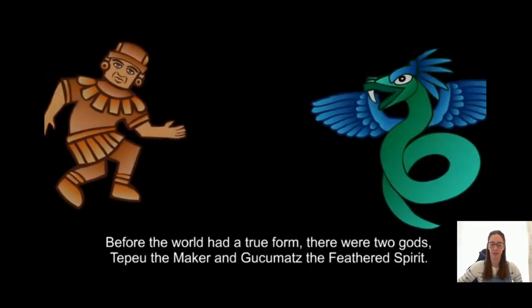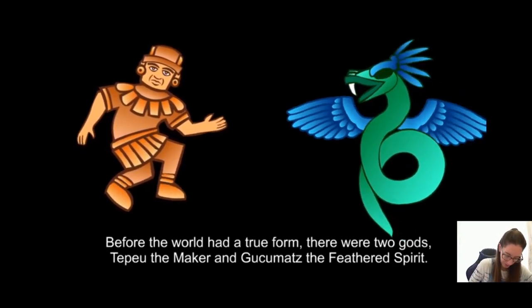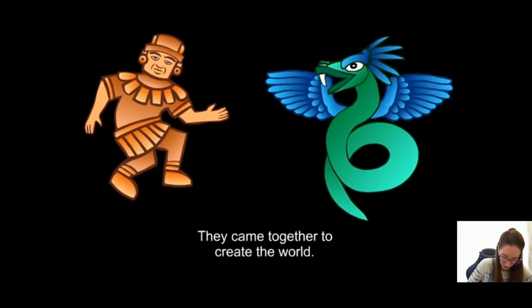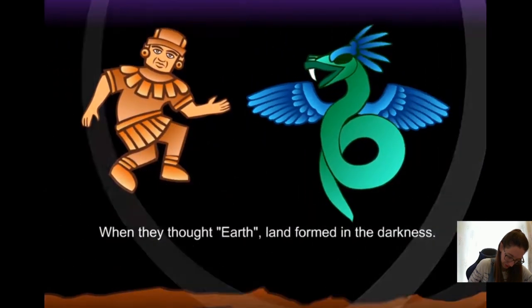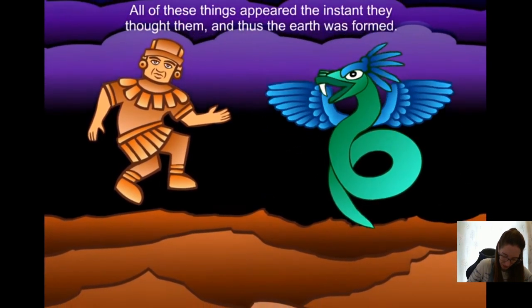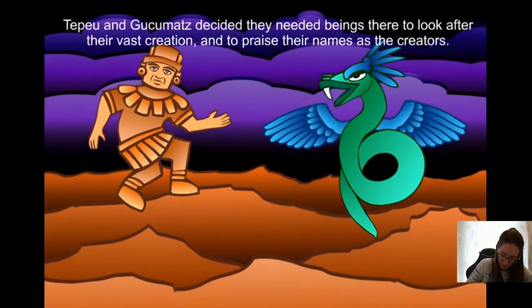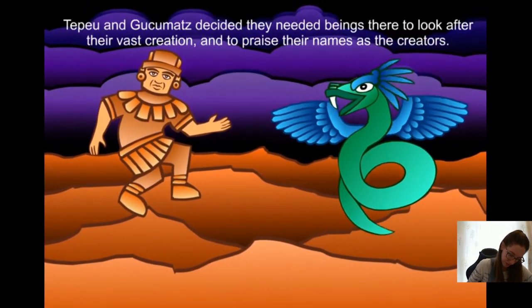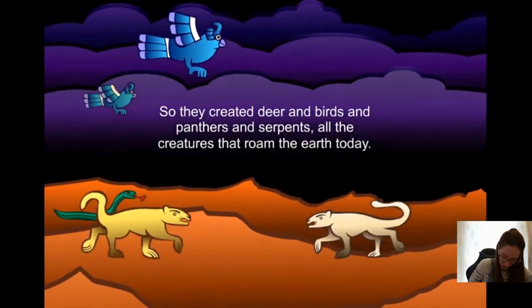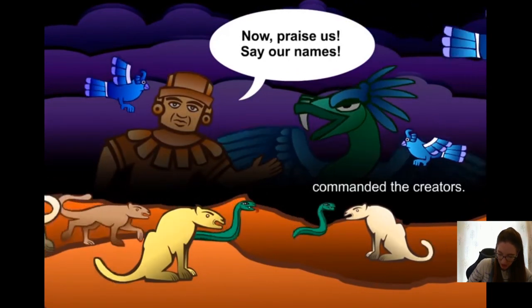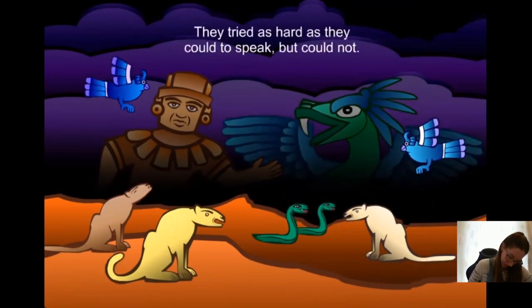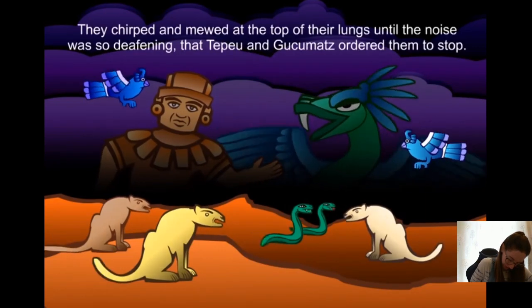Before the world had a true form there were two gods. The world around them was dark. These two glittered with brilliant blue and green feathers. They came together to create the world — whatever they thought came into being. When they thought 'earth,' land formed in the darkness. They thought mountains and valleys, pine trees and water and sky, and all of these things appeared the instant they thought them. Thus the earth was formed. Tepeu and Gucumatz decided they needed beings there to look after their vast creation and to praise their names as the creators.